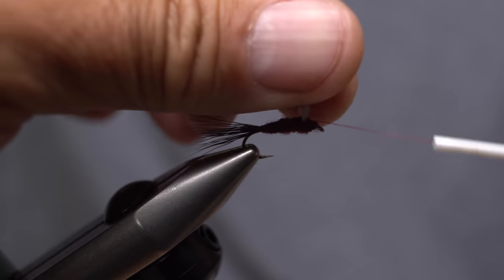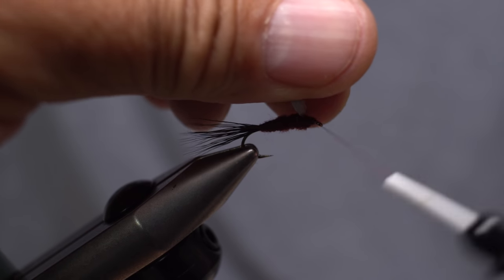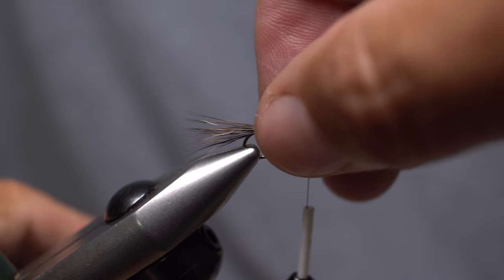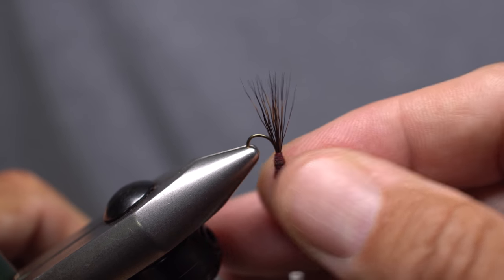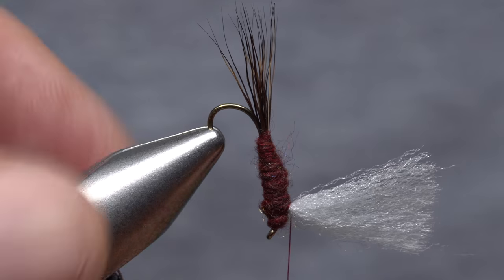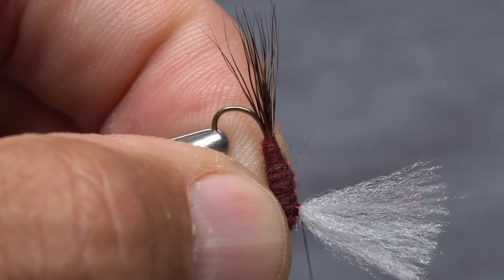Finish by taking a full clockwise wrap or two around the base of the wing post. Then get hold of the fly and reorient it in your vise so the hook eye is pointing down. Brace the fly with your left hand and take a few more wraps of tying thread to start the posting process.